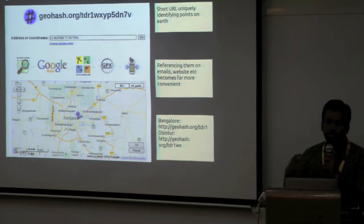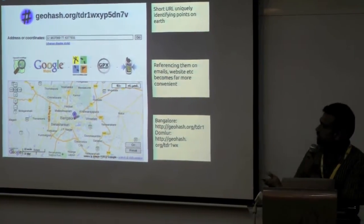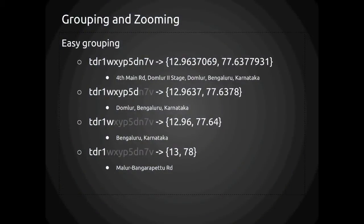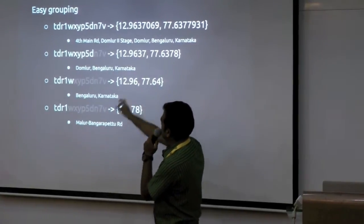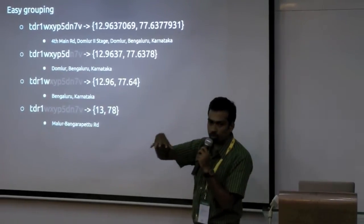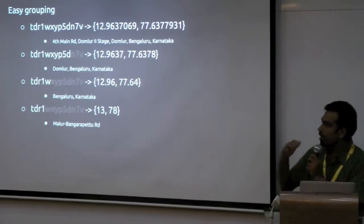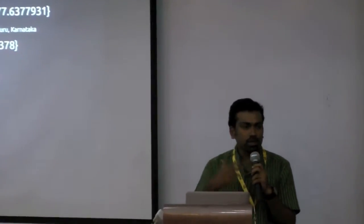This is an easy means of sharing a location in emails or Twitter — it's like URL shortening for the entire lat-long system. For example, you can just say geohash.org/TDR1 and the meeting is there. Because of the hierarchical grid structure, one major advantage is being able to easily group things. If I remove the last three characters from a full geohash, I go to a higher level — a Domino area. Remove a few more and I reach Bangalore level. TDR1 covers the entire area including Malur, Bangarupet — all of that together. This way it becomes very easy to group stuff.